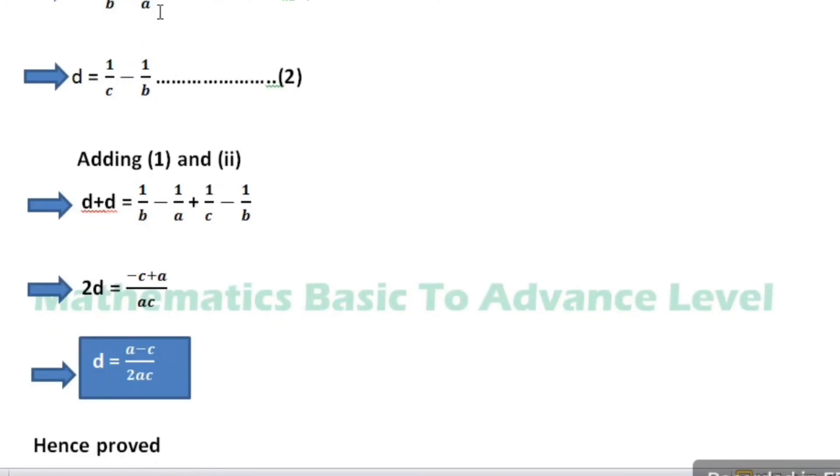Adding equation number 1 and equation number 2: d plus d is equal to 1 divided by b minus 1 divided by a plus 1 divided by c minus 1 divided by b. This implies that 2d is equal to, the 1 divided by b terms cancel out, minus 1 divided by a plus 1 divided by c.